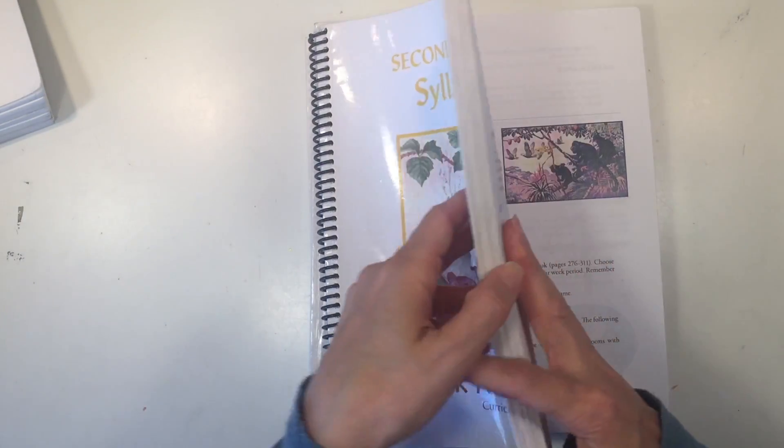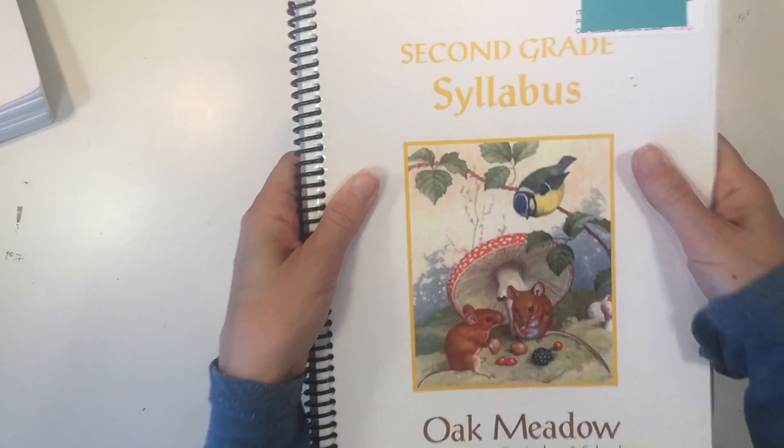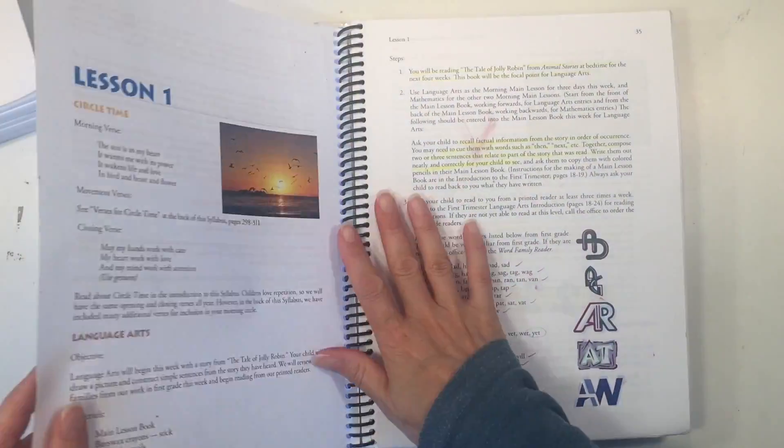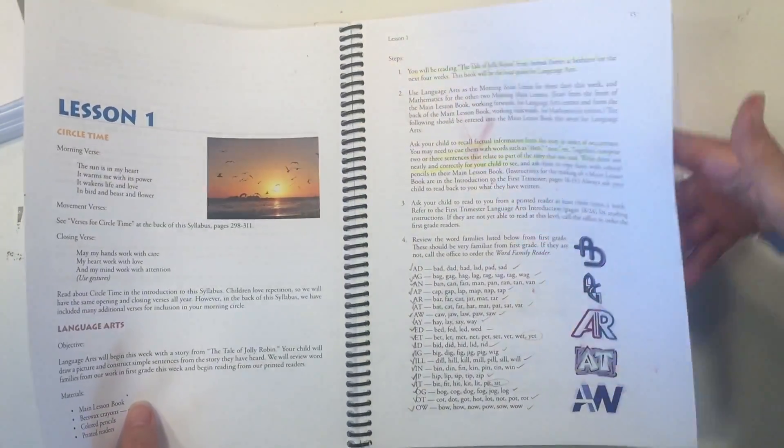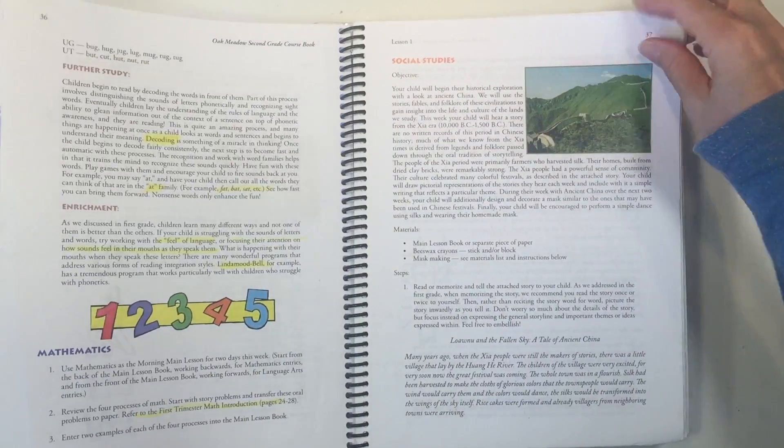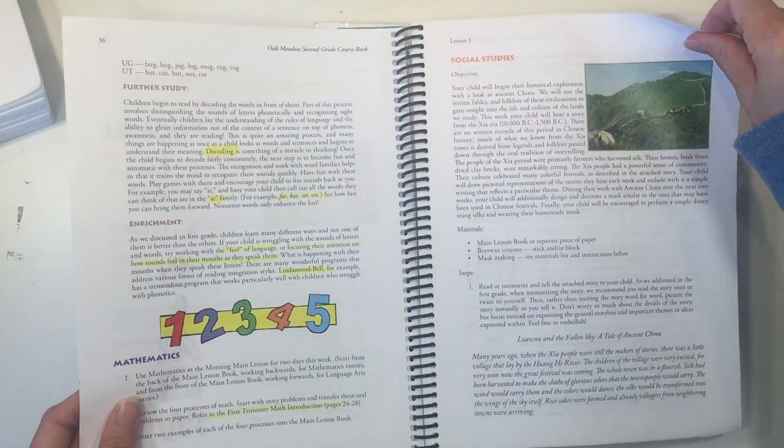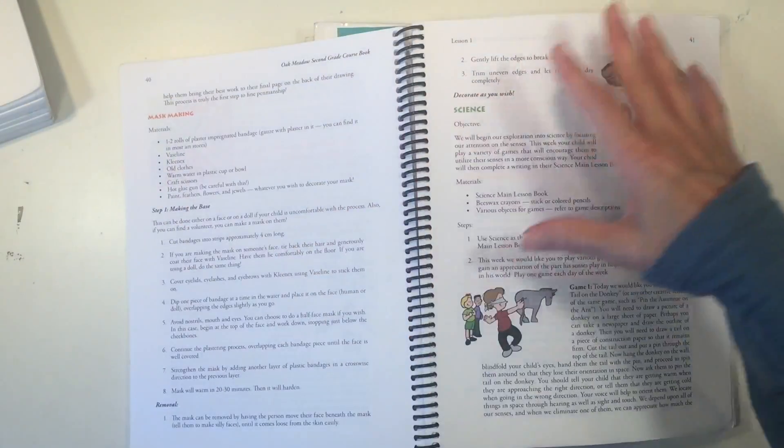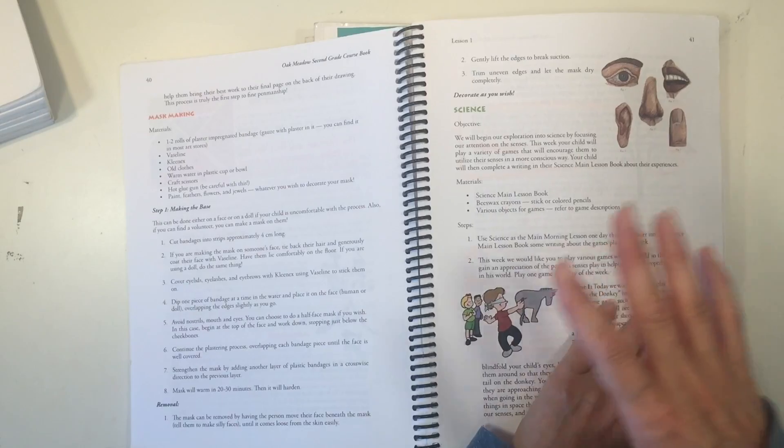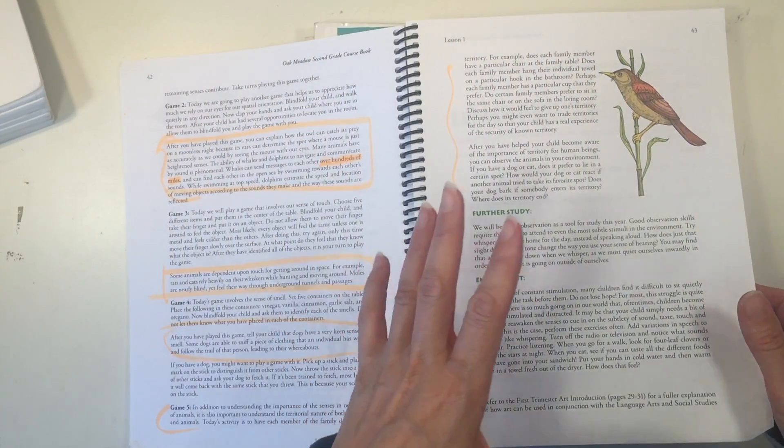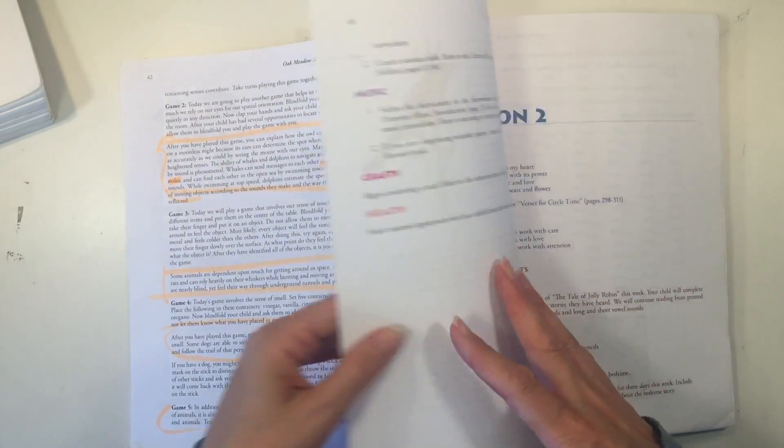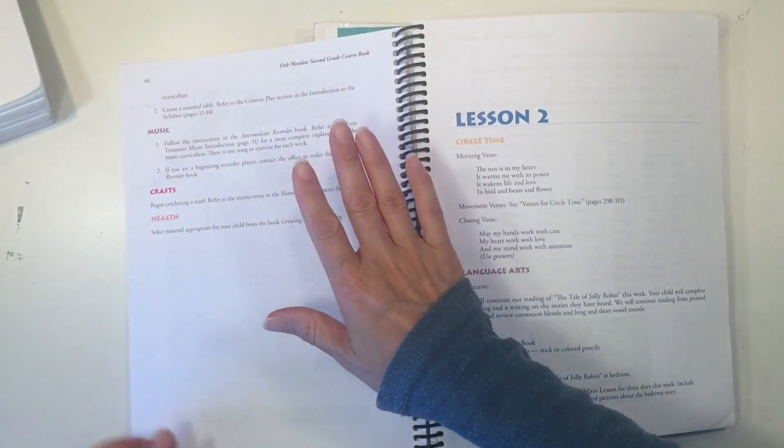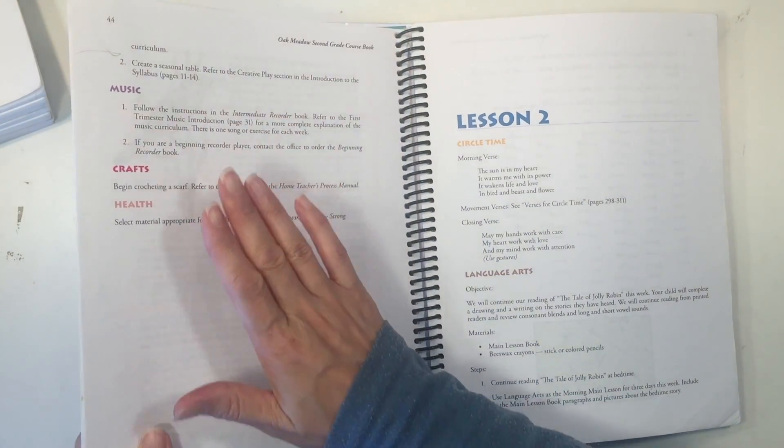But it does come with the second grade syllabus. And this is going to be the main part of your curriculum. It is divided up into 36 lessons. And each lesson is intended to last for a week. And within each lesson, you're going to have different subject areas so that you've got them all mixed together within that week. They all coordinate really well with the stories that will be read for that particular lesson for that whole week. And then it also suggests music, crafts, and health.